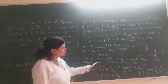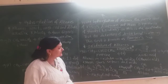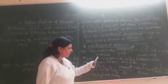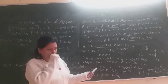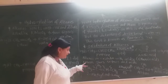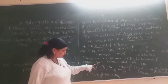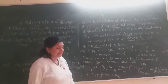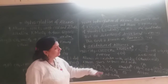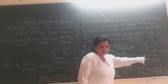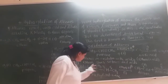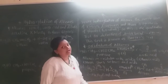Alkenes on oxidation with acidic potassium permanganate give ethanoic acid — that is, acetic acid. Acidic KMnO4 also gives ketones and carboxylic acid. So alkenes on oxidation with acidic KMnO4 give ketones and carboxylic acid.